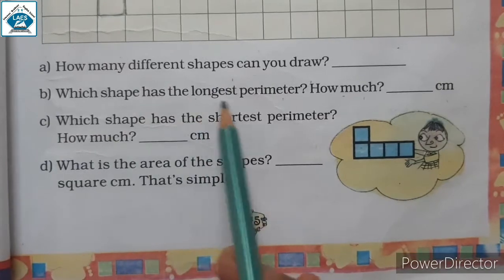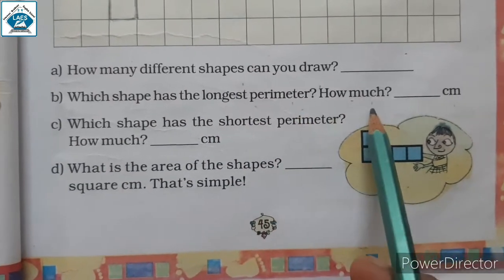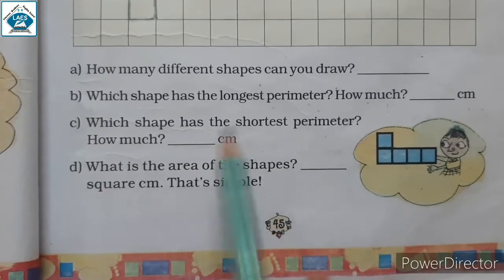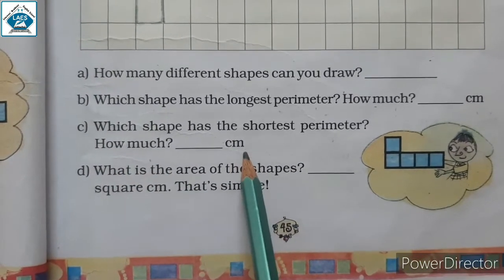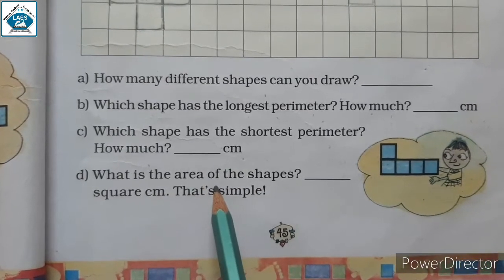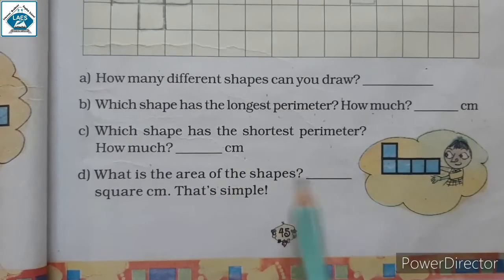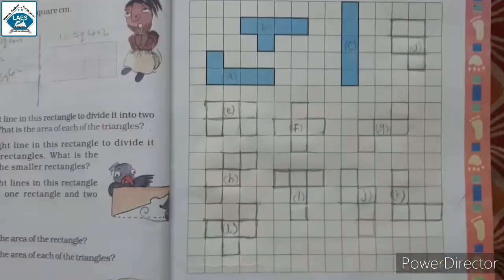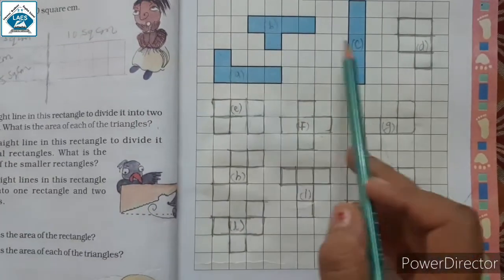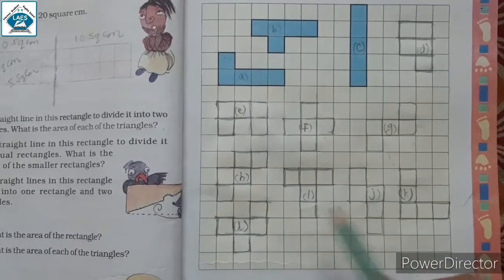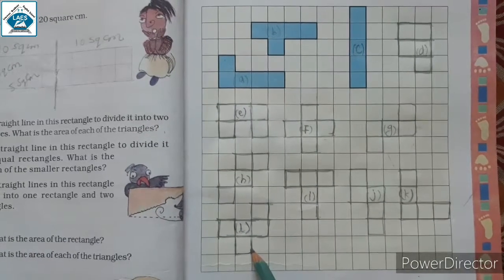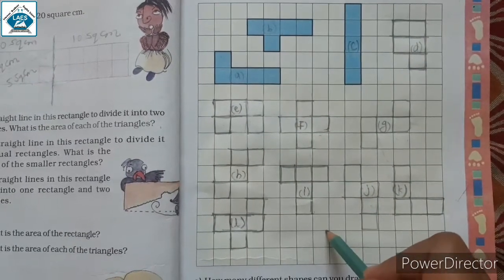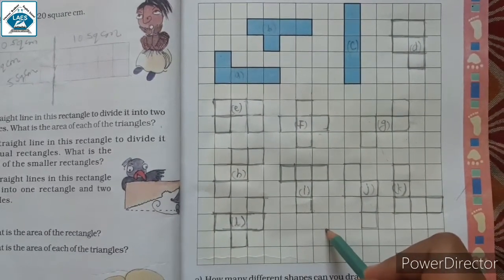B. Which shape has the longest perimeter? How much — dash — centimeter? C. Which shape has the shortest perimeter? How much — dash — centimeter? D. What is the area of the shapes — dash — square centimeter? You can see shapes A, B, C, D, E, F, G, H, I, J, K, L. It means 12 shapes are made here with pentomino.